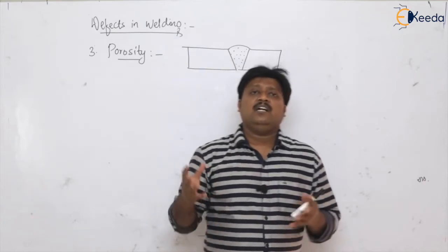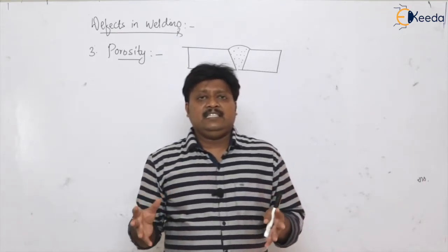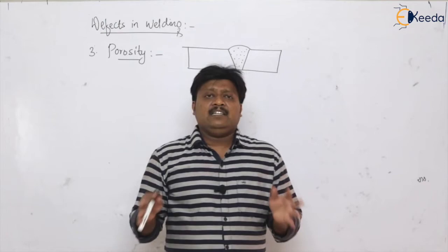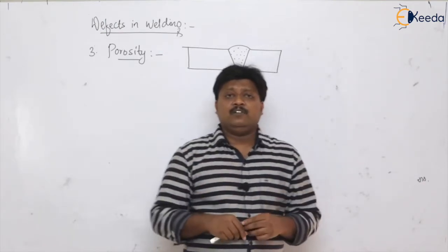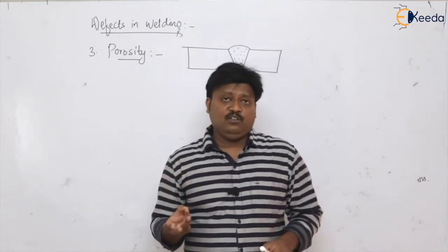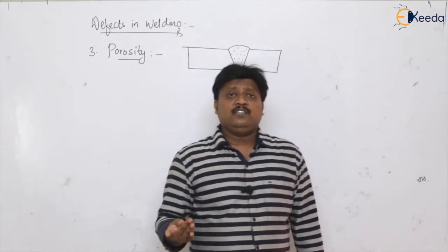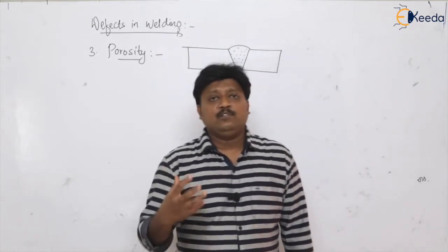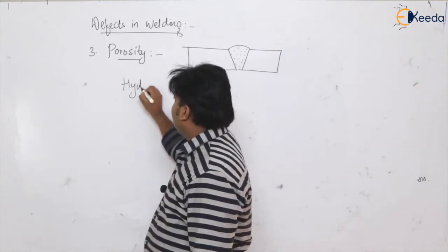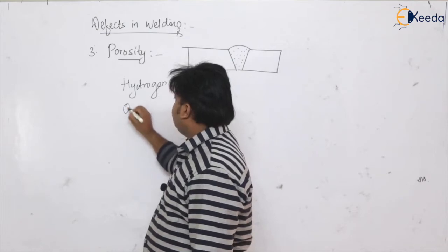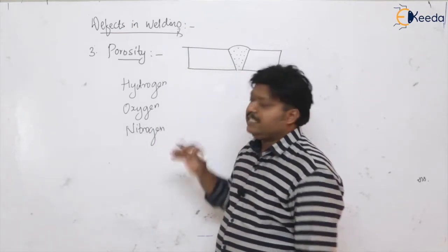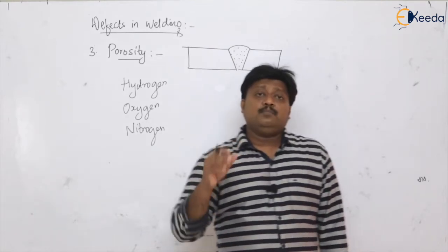Argon, helium, and carbon dioxide are insoluble in the molten material, so they act as shielding gases and do not cause porosity. However, hydrogen, oxygen, and nitrogen are the main sources of porosity in welding — the entrapment of these gases is responsible for causing porosity in the weld.